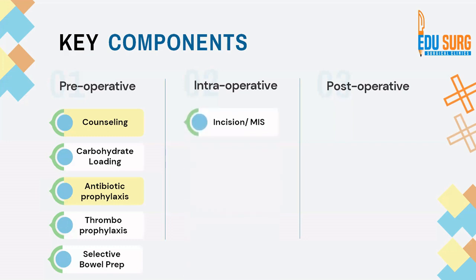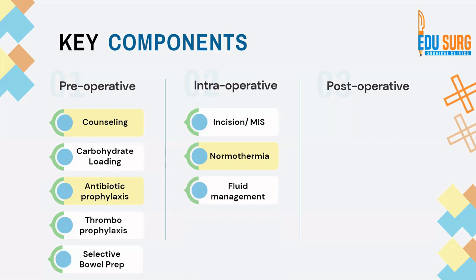Key intraoperative components of ERAS include minimizing incisions and using minimally invasive surgery wherever feasible, maintenance of normothermia using bed warmers and in-line warmers, and goal-directed fluid therapy to avoid both fluid overloading and dehydration. The right fluid balance is estimated using advanced monitors measuring stroke volume or cardiac output, though CVP can also be used.